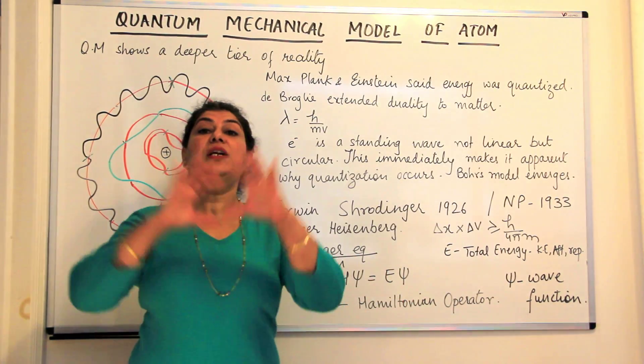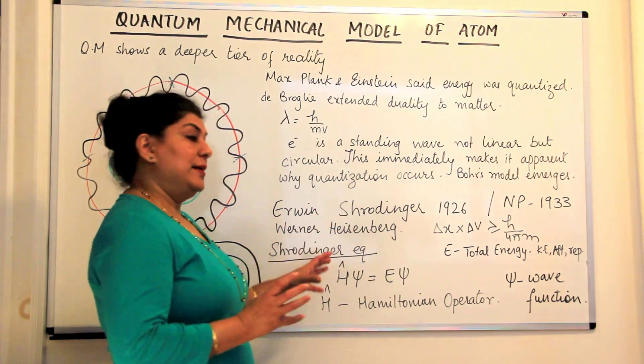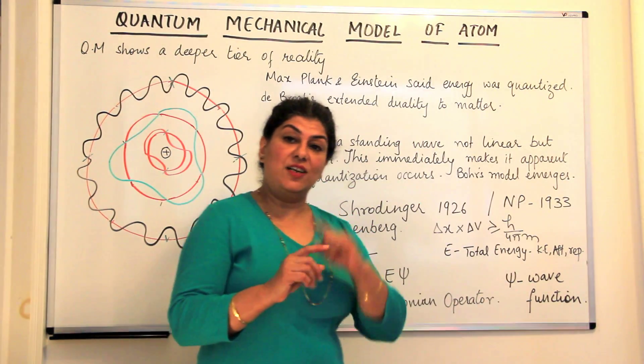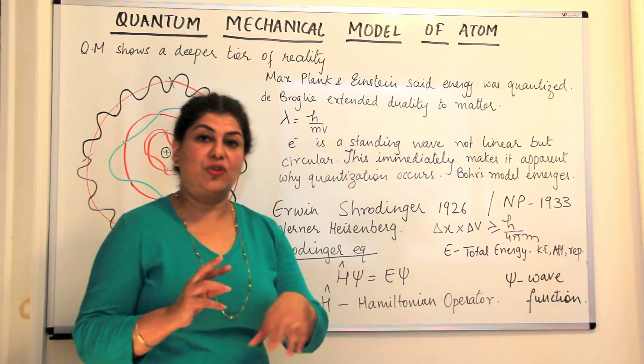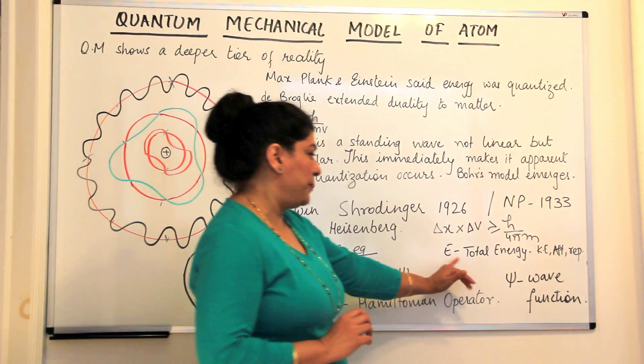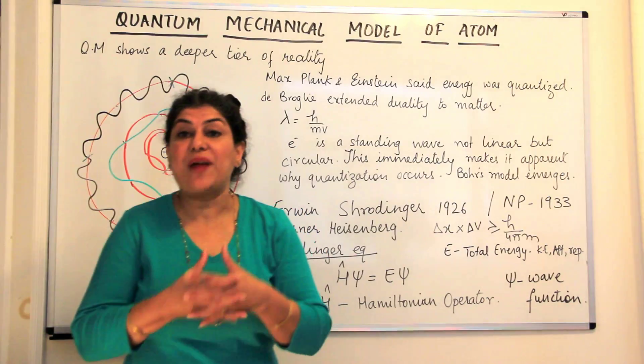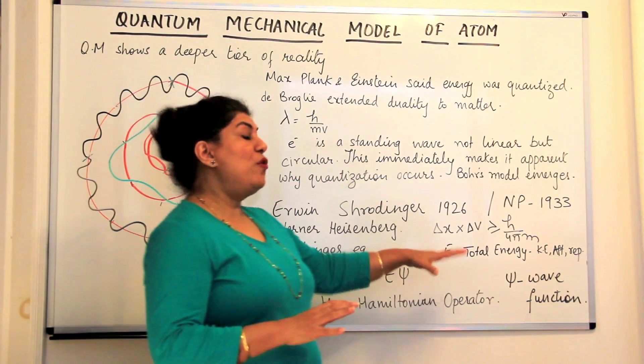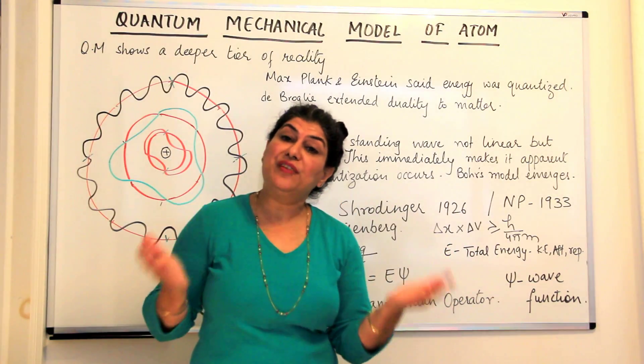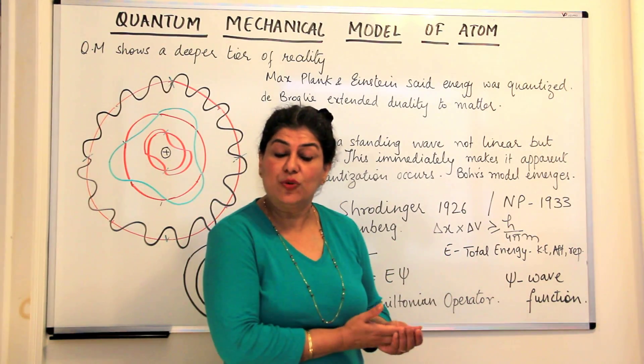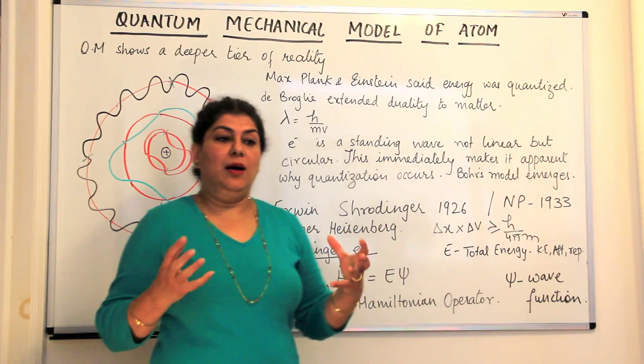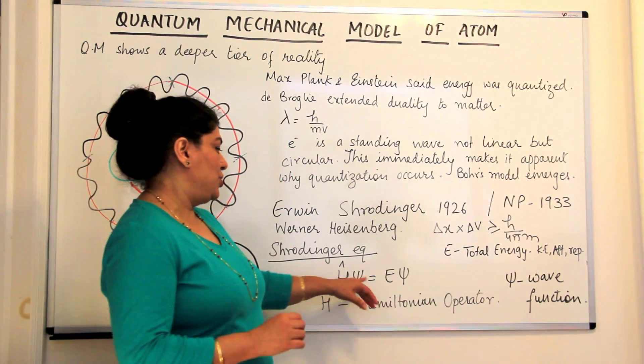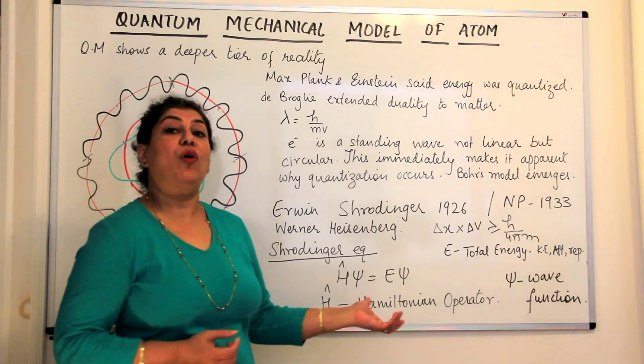E was the total energy of the system, that is, the energy of an atom would be the total energy, the kinetic energy of all the particles, the electrons, the protons, whatever particles are present in the atom, the forces of attraction between the electrons and the nucleus, and the forces of repulsion between different electrons and between the protons present inside the nucleus. So it took all these energies and the sum of all these energies formed the total energy of the system.